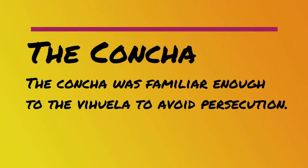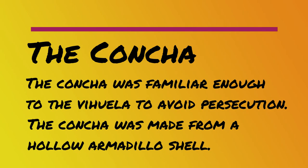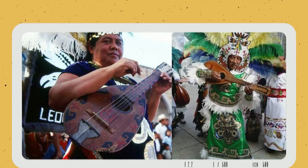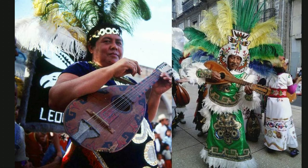During the Columbian exchange, Catholic priests banned natives from using any musical instruments, but the concha was familiar enough to the Spanish to avoid persecution. The concha was made from a hollow armadillo shell, as armadillos were abundant. Music and dance became a very important role in Mexican and Chicano folklore.